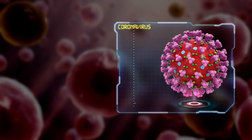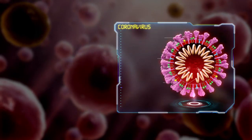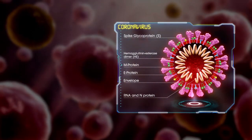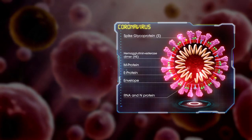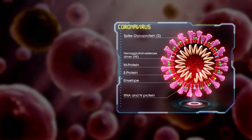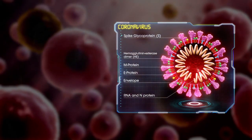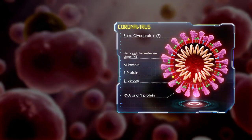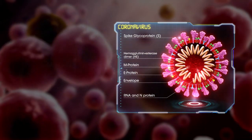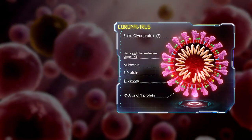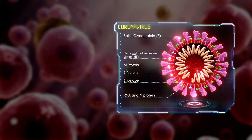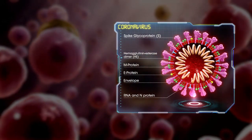The structure of coronavirus has multiple parts. Inside the virus lies the genetic encoding that allows the virus to hijack human cells and turn them into virus factories. A protein encapsulates the genetic material, known as the viral envelope.